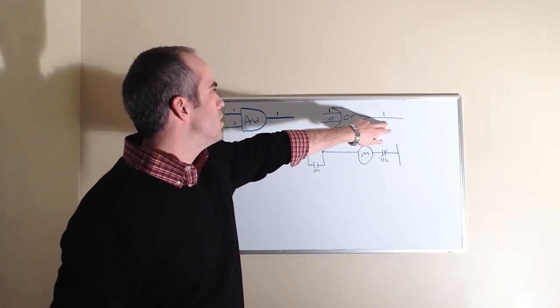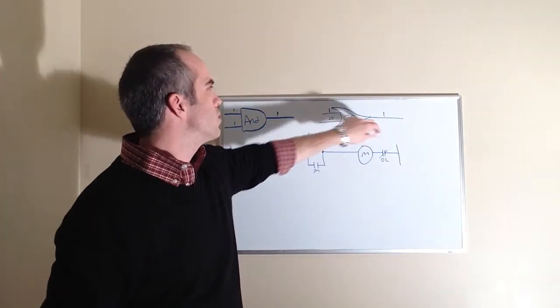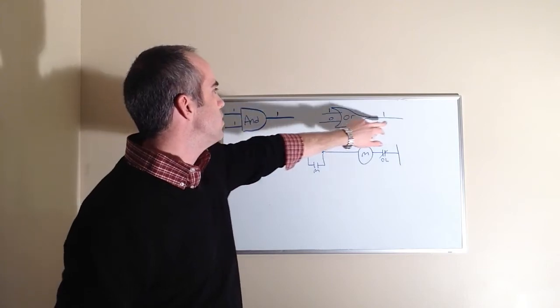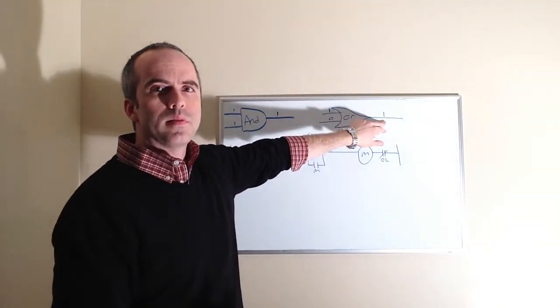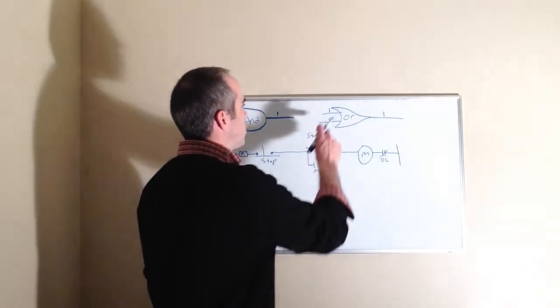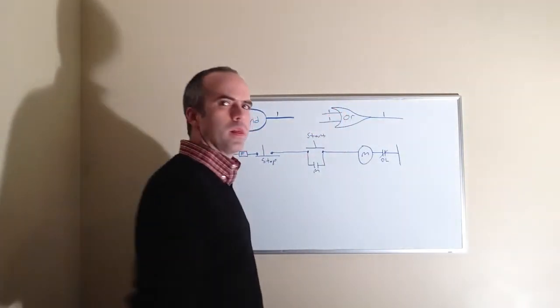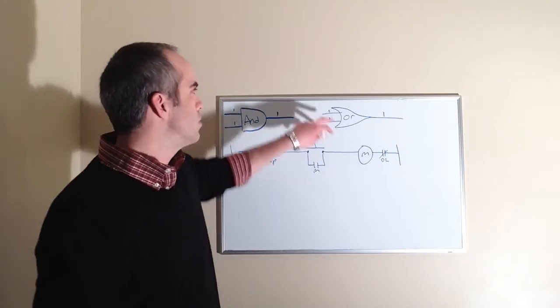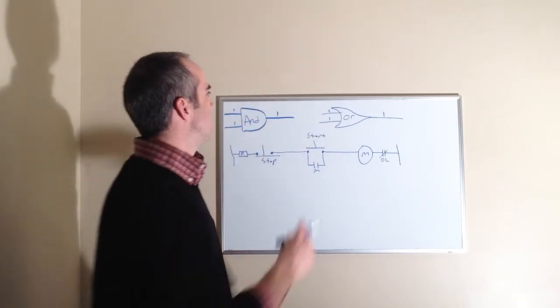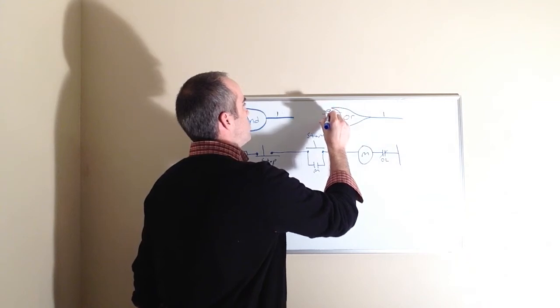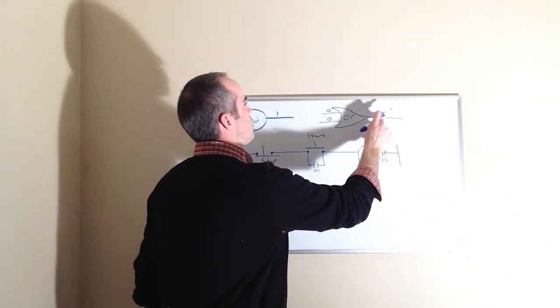So we have a one here, a zero here, and it gives us an output. It makes the output on or one. If we had a one and a one it would still give us an output because we have this or this. If we had a zero and zero, that's the only way we would have a zero on the output.